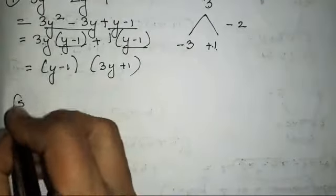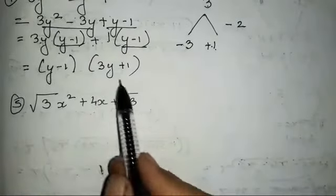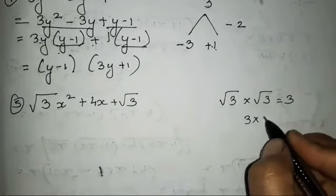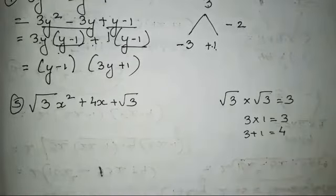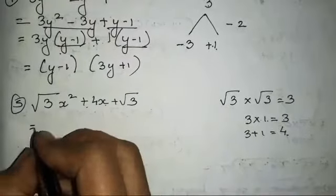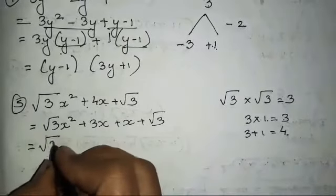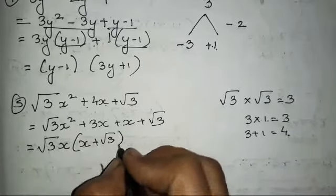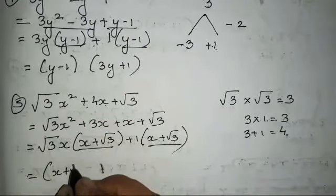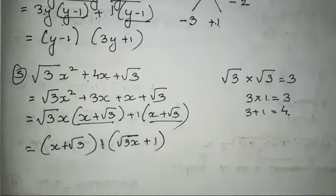Now let's do the fifth one. The fifth one is also a little different: √3·x² + 4x + √3. Now see, √3 into √3 is going to be 3. So 3×1=3, and 3+1=4. We need 4 - we have got it. So √3·x² + 3x + x + √3. Taking √3·x common: √3x(x+√3). Taking 1 common: 1(x+√3). The common bracket is (x+√3) and the other bracket is (√3x+1).